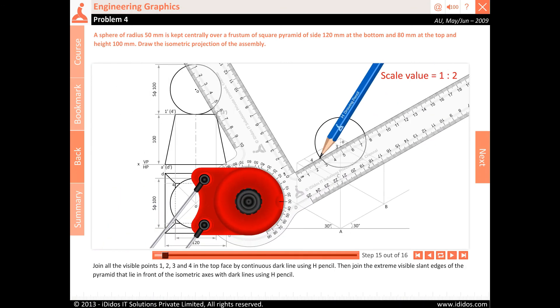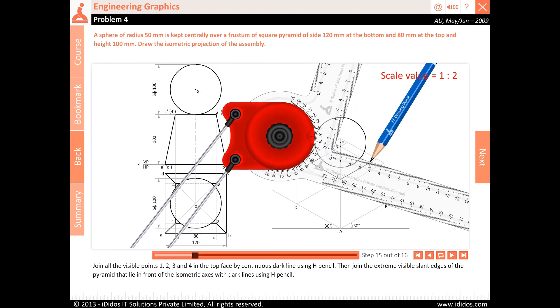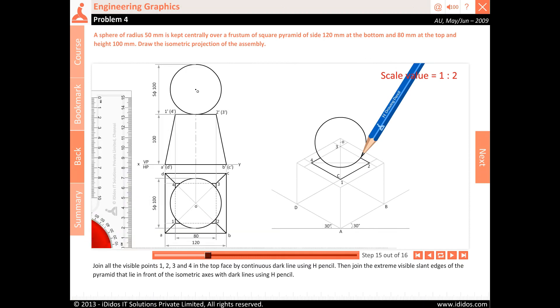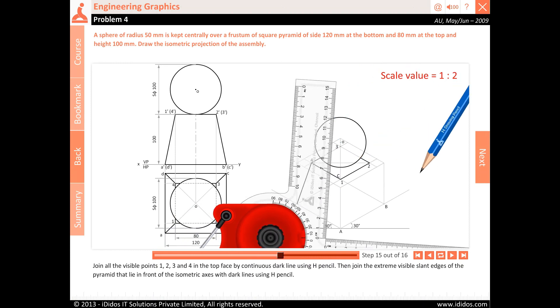Join all the visible points 1, 2, 3 and 4 in the top face by continuous dark line using H pencil. Then join the extreme visible slant edges of the pyramid that lie in front of the isometric axes with dark lines using H pencil.